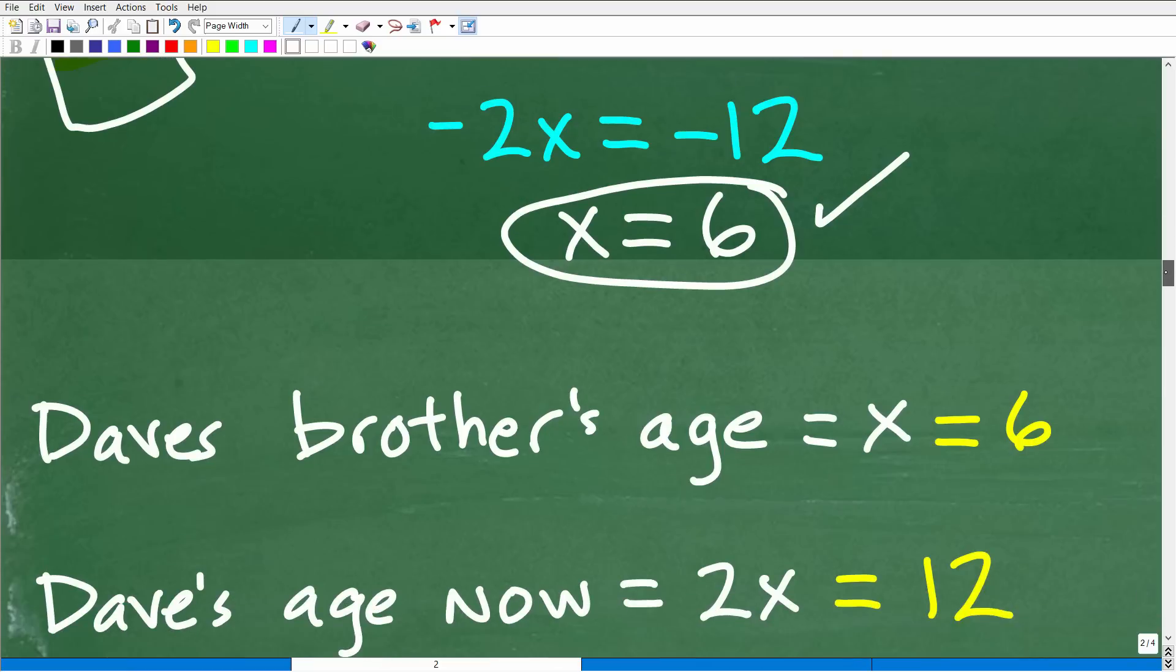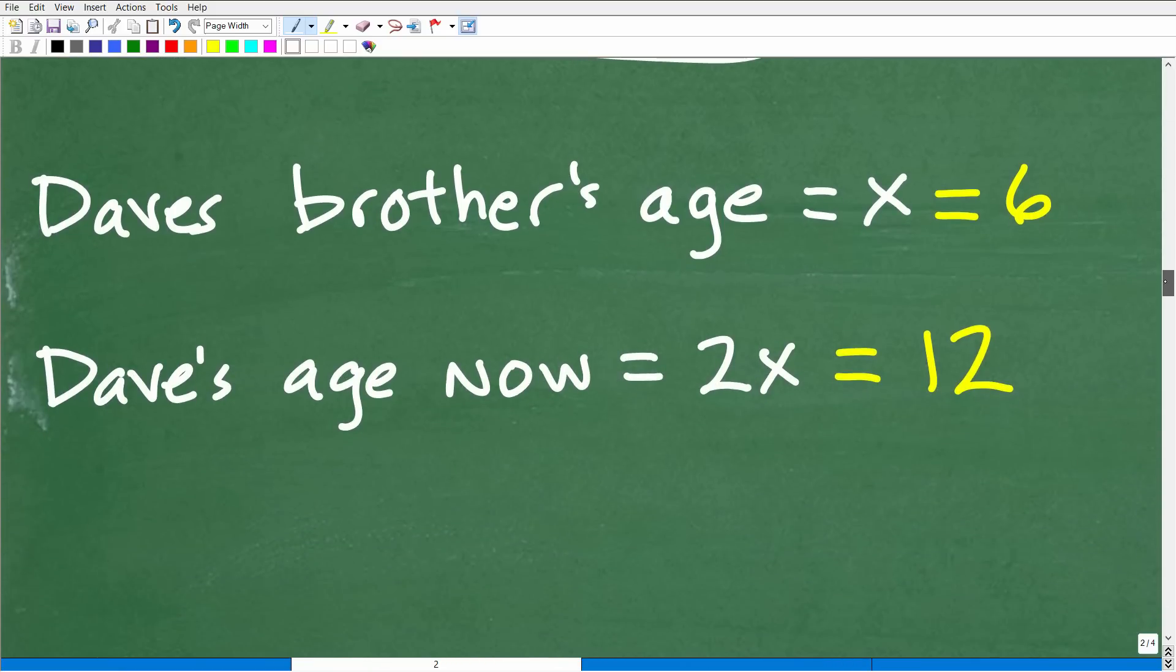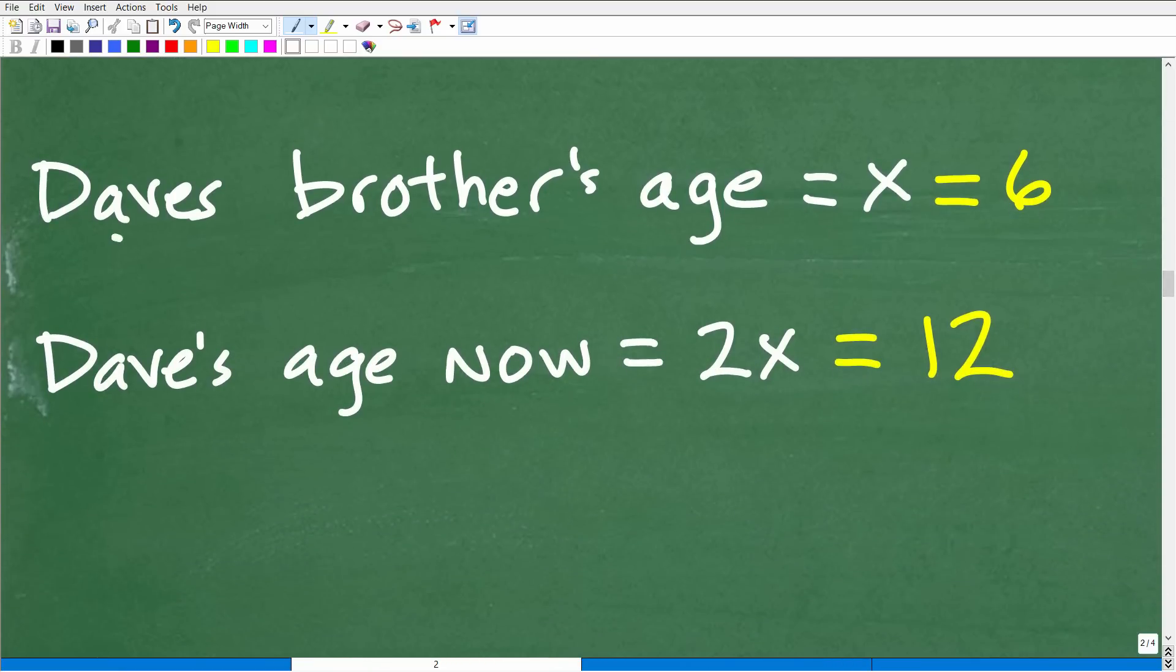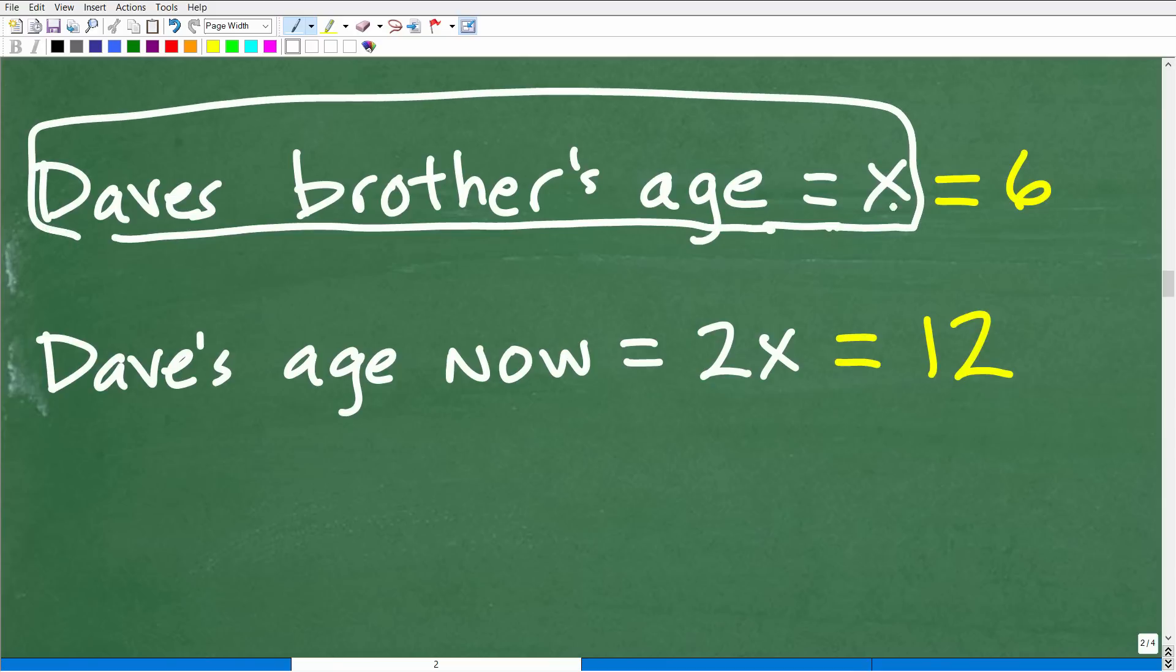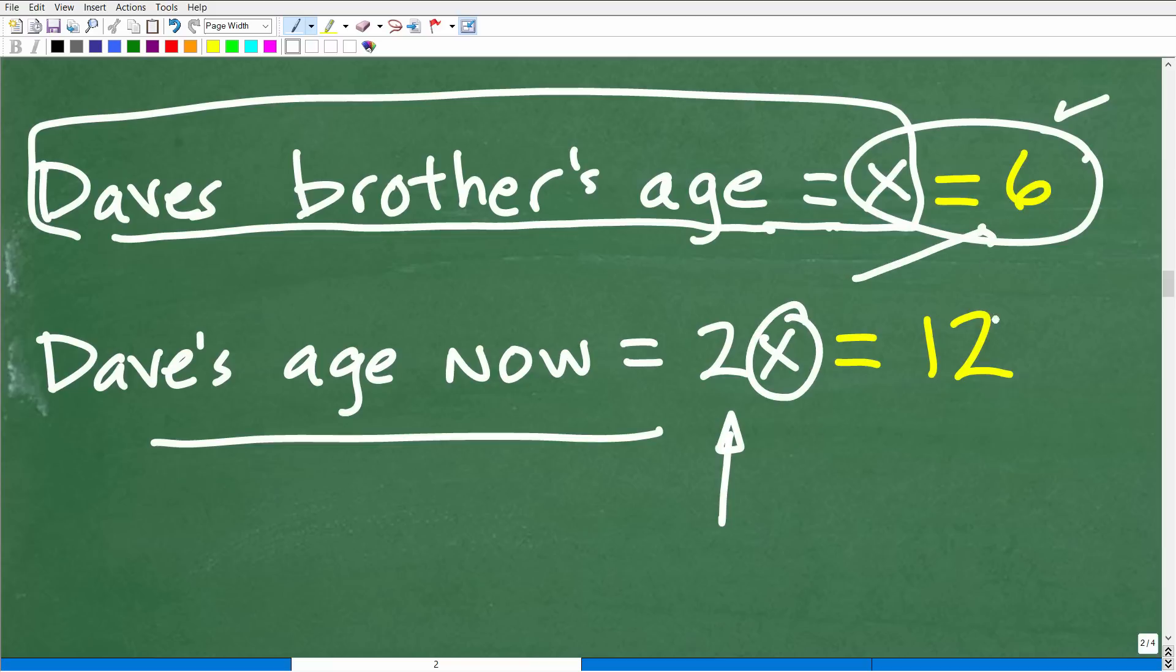Here we end up with x equals 6. What does that mean again? We have to go back to our variable setup. We said Dave's brother's age is equal to x, right? Remember in the beginning of the problem. So x equals 6. Dave's brother's current age is 6 years old. So Dave's age will be 2x or 2 times 6, which is 12 years old.